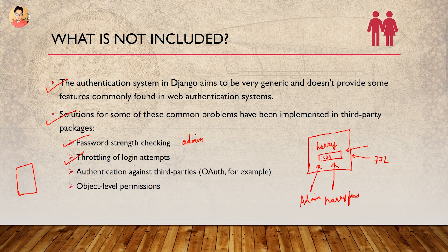Authentication against third parties is also not included — login by Google, login by Facebook, login by some other company. All those things are not included, and it really makes sense to not include them in such a lightweight authentication system. Object-level permissions are also not included — these are specific permissions you might want to add. You can include them as part of the user profile or as part of some other model which has a one-to-one relation with the user profile.